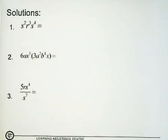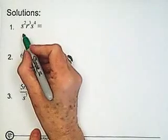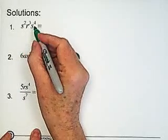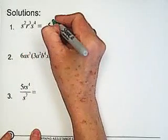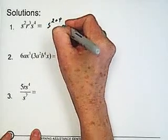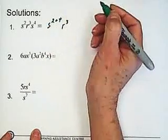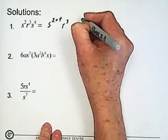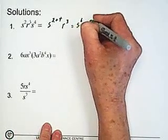Now again, we can only combine powers that have the same base. So we can only combine the exponents. So here, the powers that have the same base are the s's. So we end up with s to the 2 plus 4, and the r stays the same with r cubed. So this becomes s to the 6 r cubed.